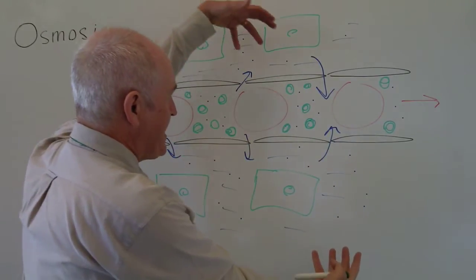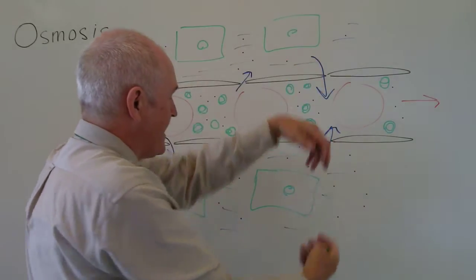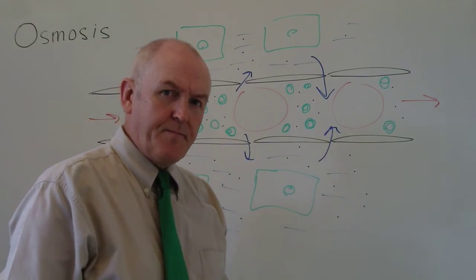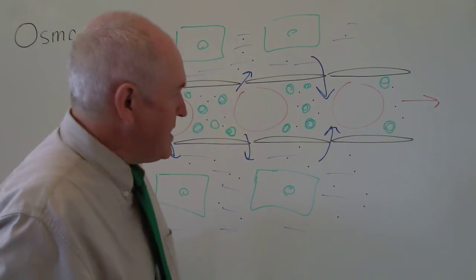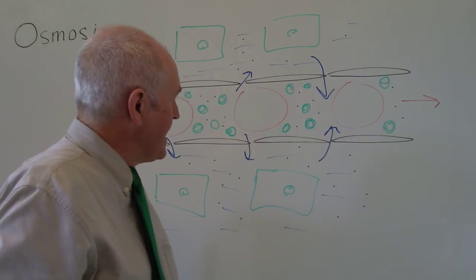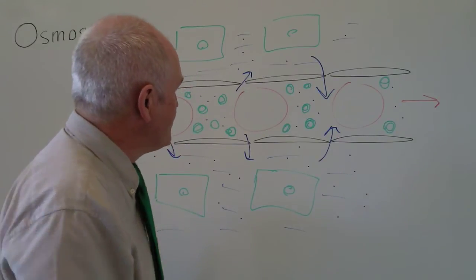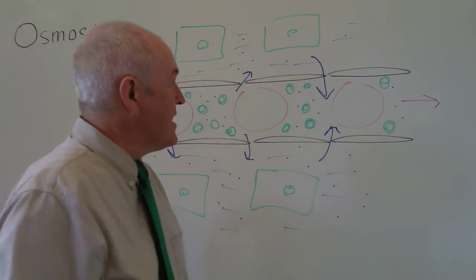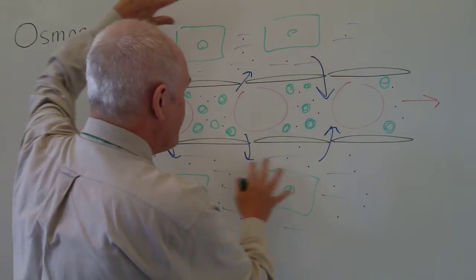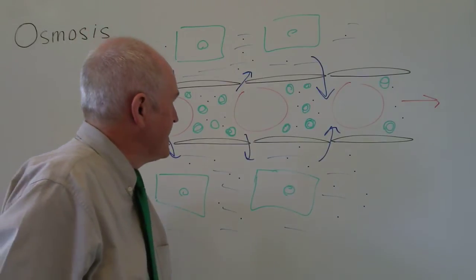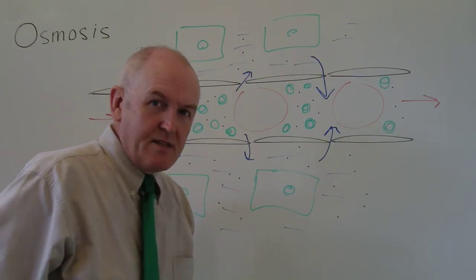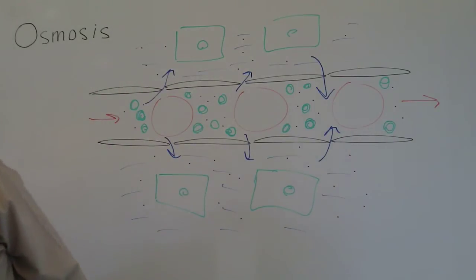The oncotic pressure is the only difference between the plasma and the tissue fluid. It is the presence of plasma proteins generating this oncotic pressure which is sucking water back into the intravascular compartment at the venous end of the capillary. Suppose someone was hypoproteinemic or hypoalbuminemic — they did not have enough albumin in their plasma. That would reduce the oncotic pressure, therefore less water would be reabsorbed at the venous end, and the patient would become oedematous with fluid retained in the interstitial compartment.